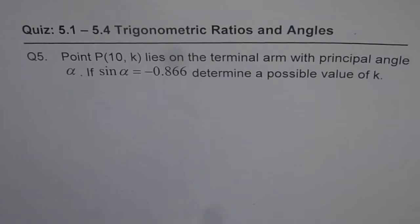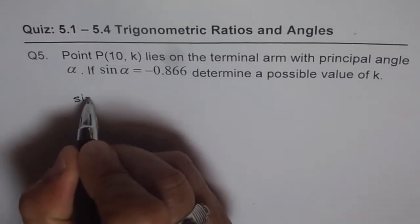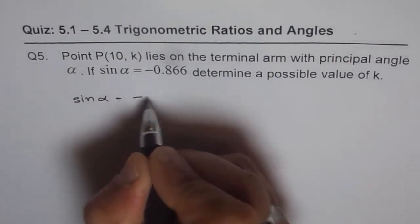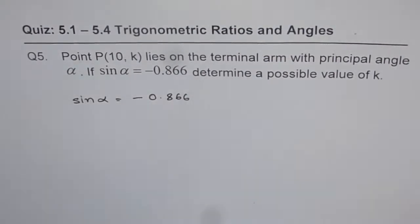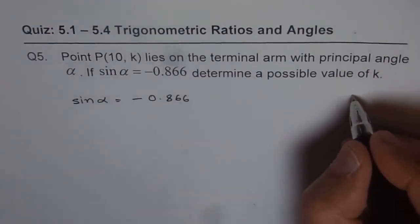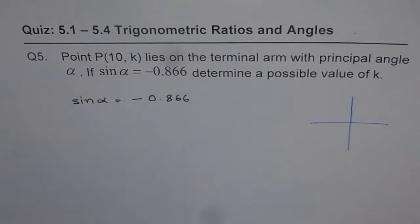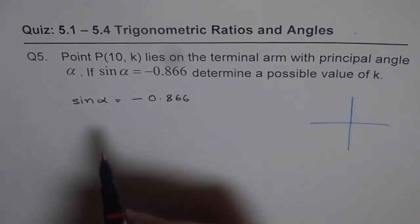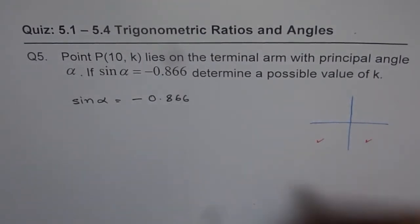We know sin alpha is equal to a negative value: 0.866. If sin is negative, then in which quadrant do you expect the terminal arm to be? There are two possibilities — a negative sin value could place us in quadrant 3 or quadrant 4.